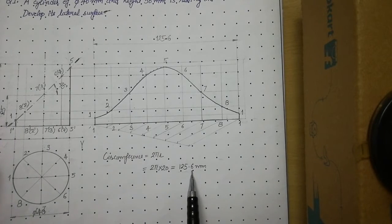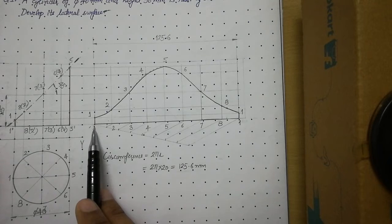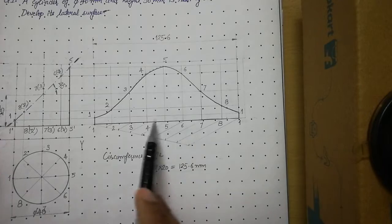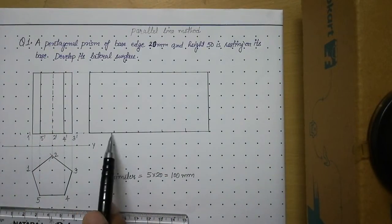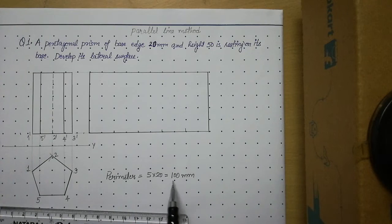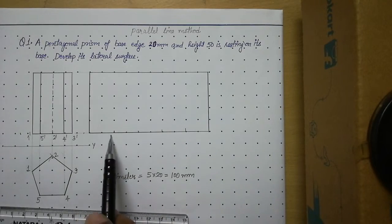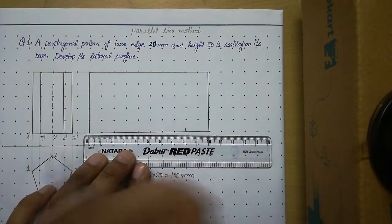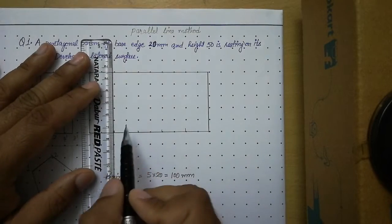For prisms you always get a value you can easily measure with a scale. In this case the length is 100 mm divided into five equal parts of 20 mm each, which you can directly measure on your scale. So there is no need to follow the cylinder method for dividing the length.